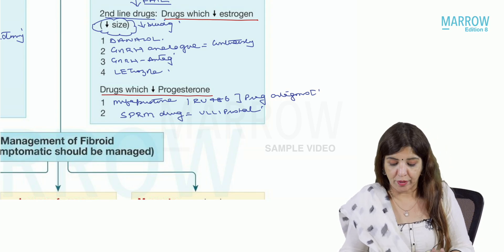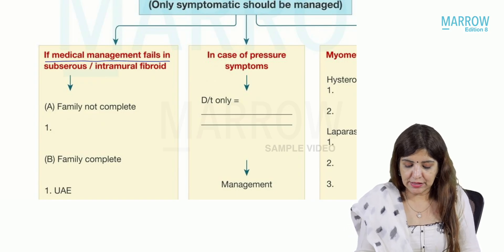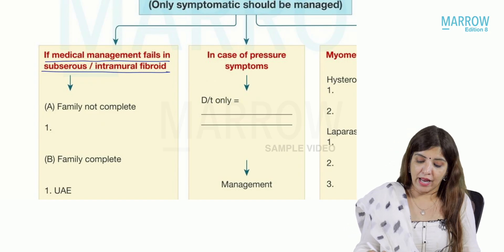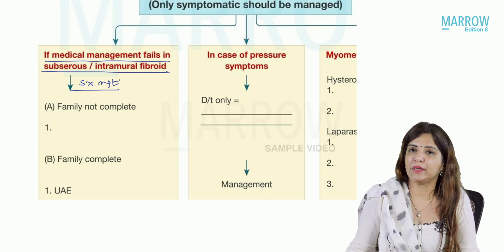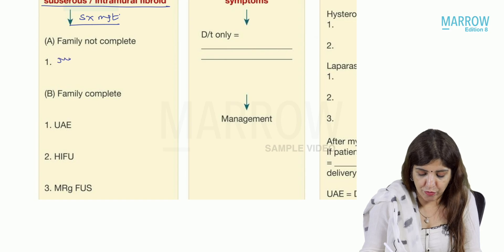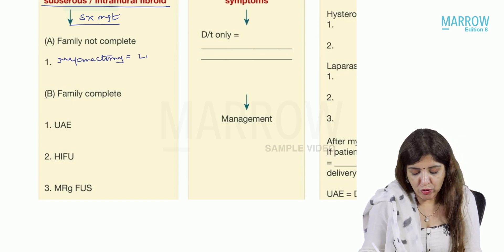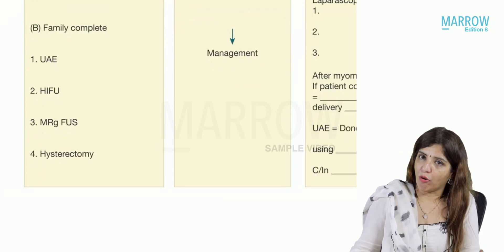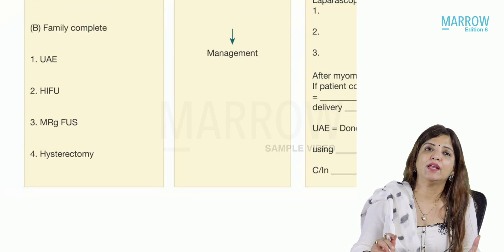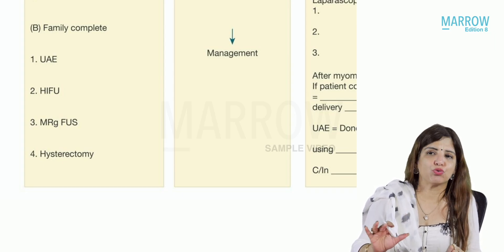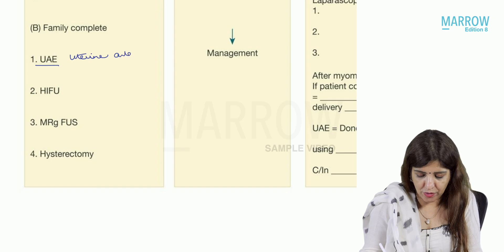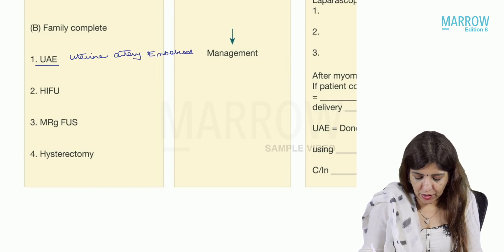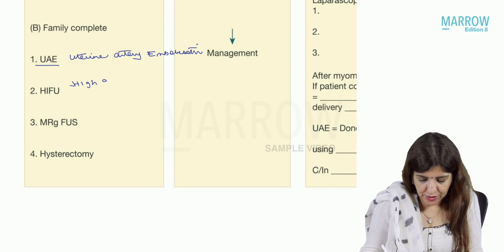If medical management fails for subserous and intramural fibroid, go for surgical management. Assess whether the patient's family is complete. If family is not complete, the only option is myomectomy done laparoscopically. If family is complete, you can perform hysterectomy, or do uterine artery embolization, or HIFU (high intensity focused ultrasound) — procedures that conserve the uterus without requiring hysterectomy.